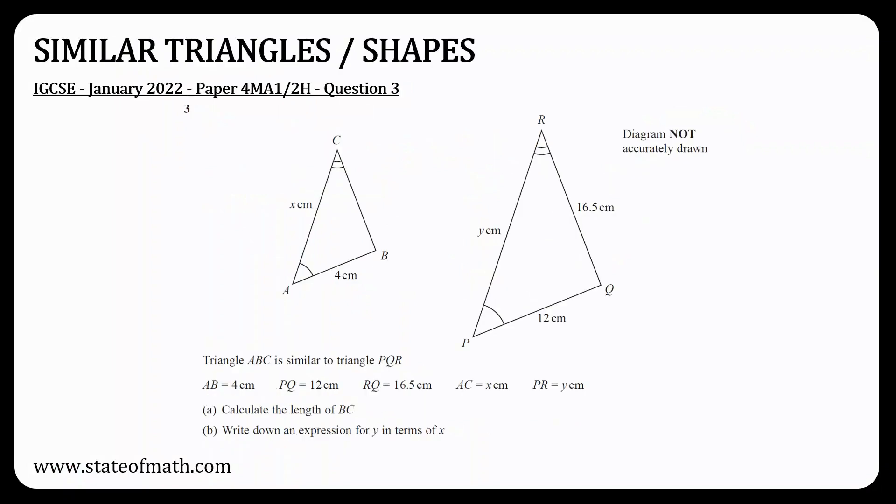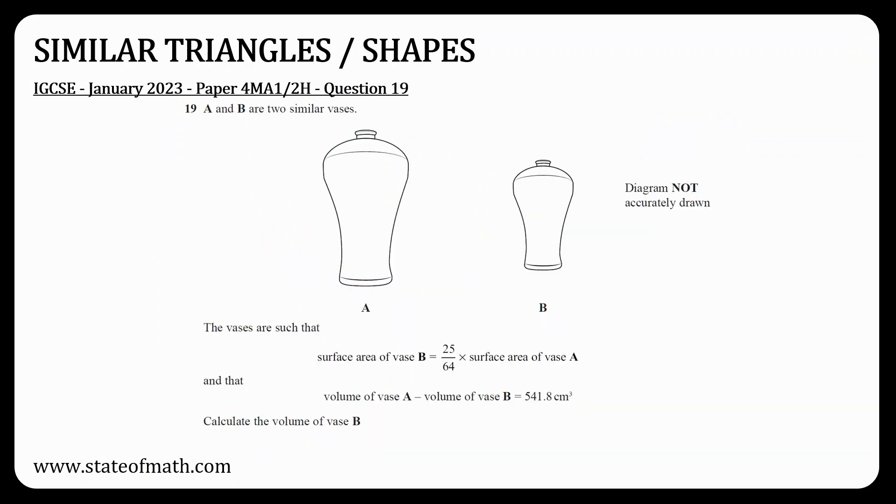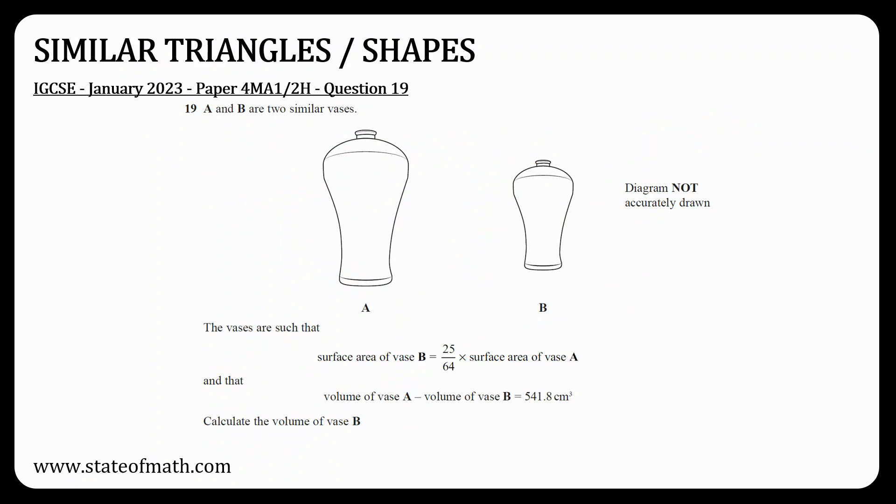Next topic is similar triangles or other shapes. In their simplest form you will need to find missing sides like this question, or work with areas and volumes of similar shapes like we had to do here. Note that for this topic you might get a question involving a frustum.